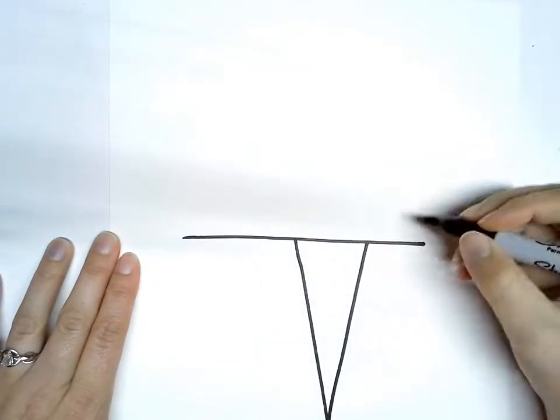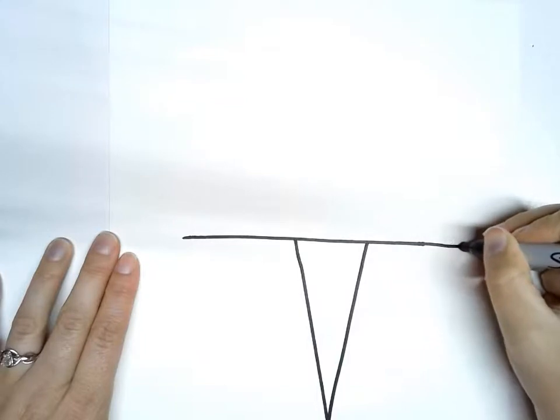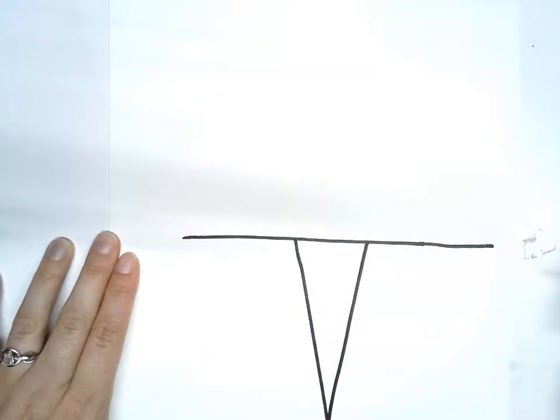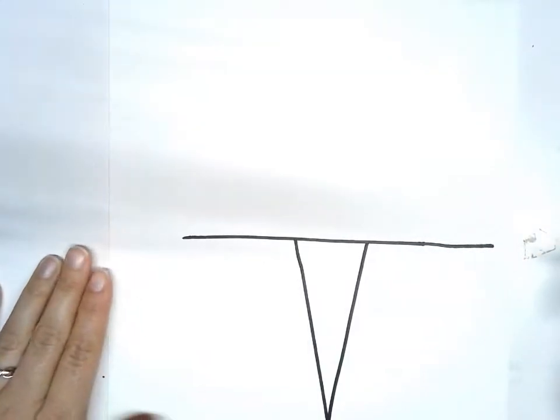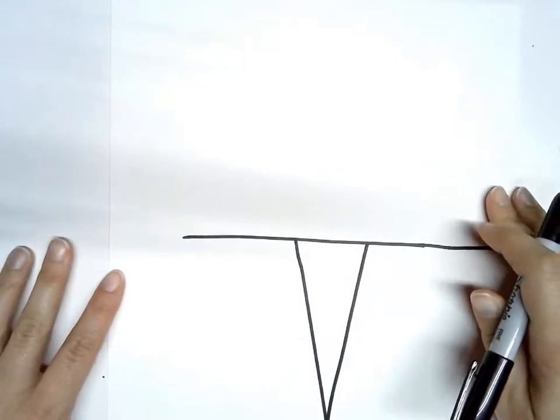You can see mine wasn't quite in the middle so I'm going to lengthen this because I want it to be pretty even on both sides. It's going to be fairly symmetrical like a dragonfly's wings would be.